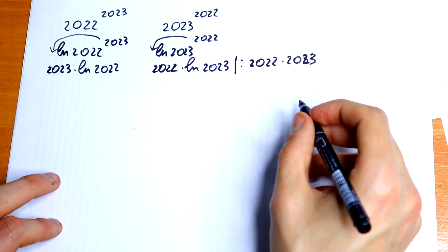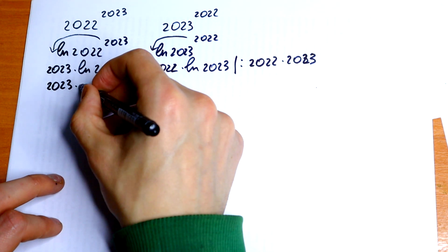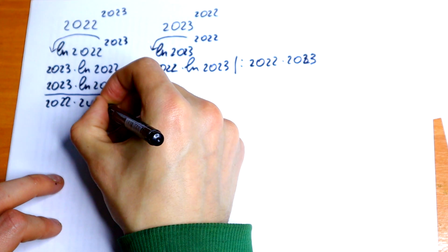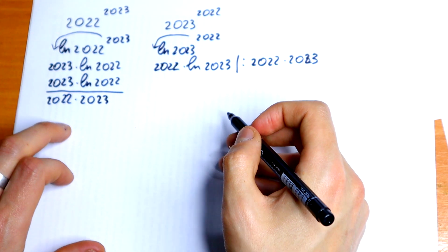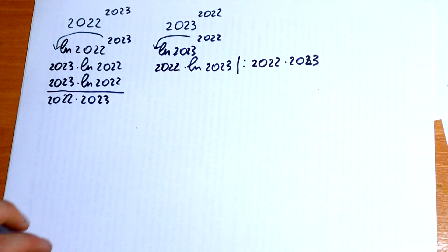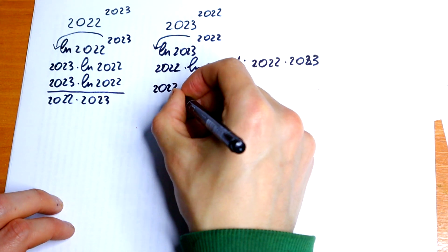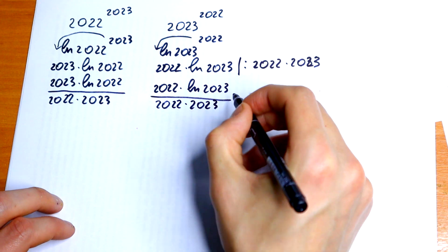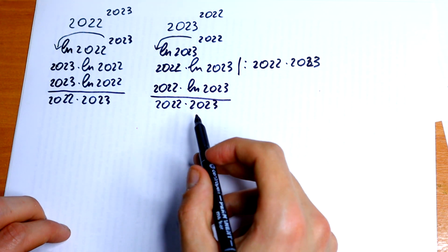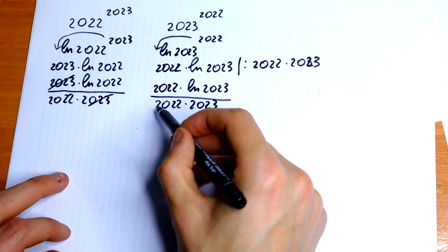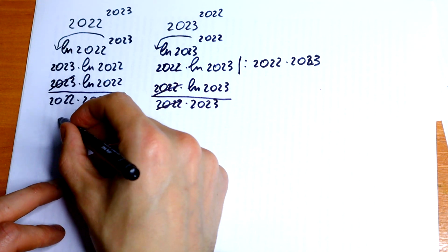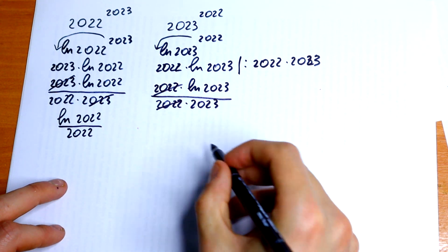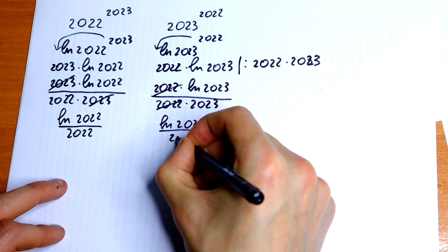What will we receive on the left? We have 2023 times natural log of 2022, all over the product 2022 times 2023. We can cancel the 2023 factors, and similarly on the right we cancel 2022. We will receive natural log of 2022 all over 2022 on the left, and natural log of 2023 all over 2023 on the right.